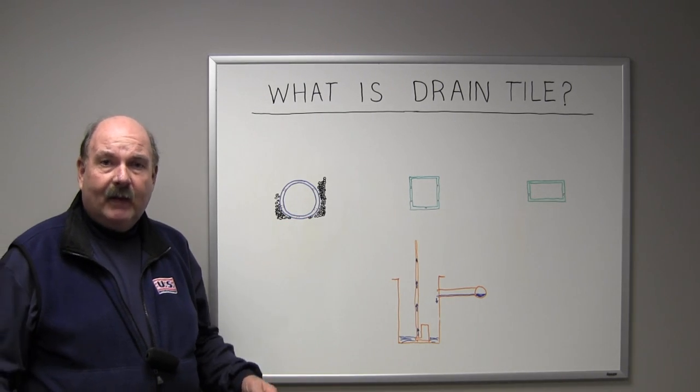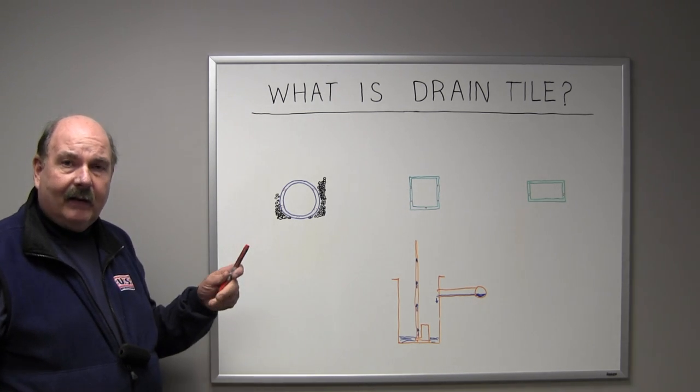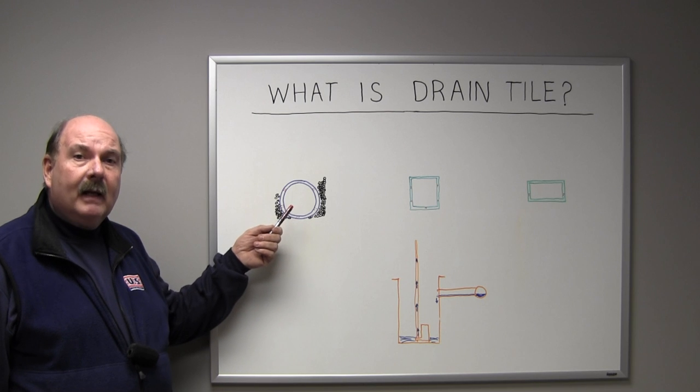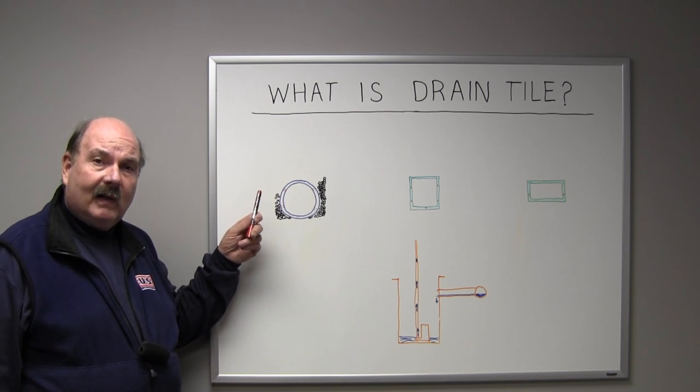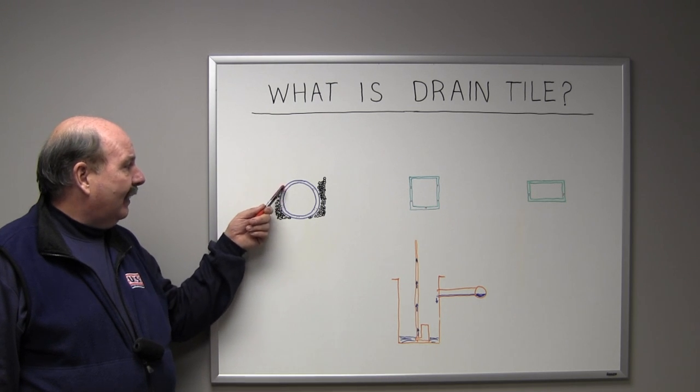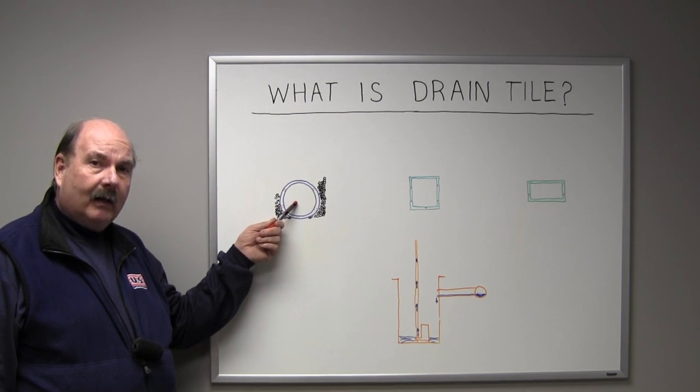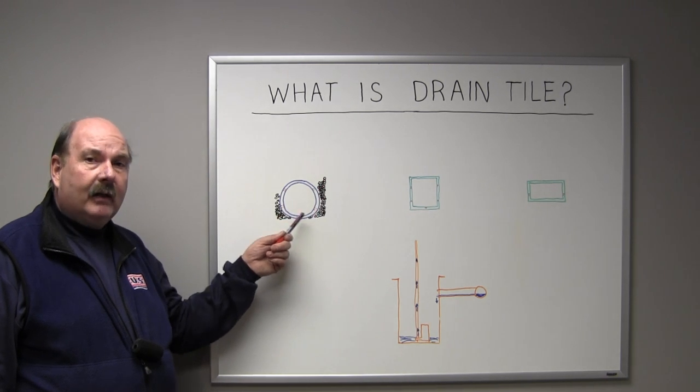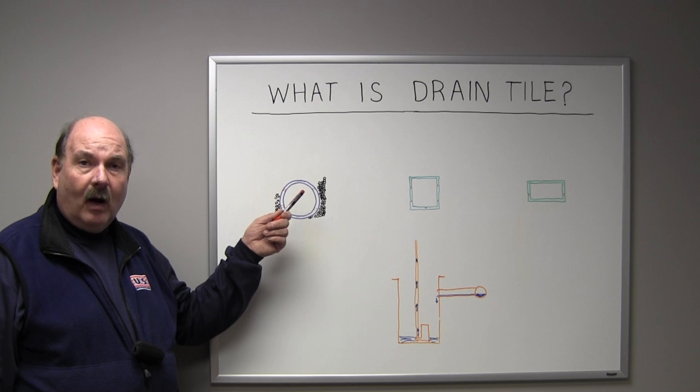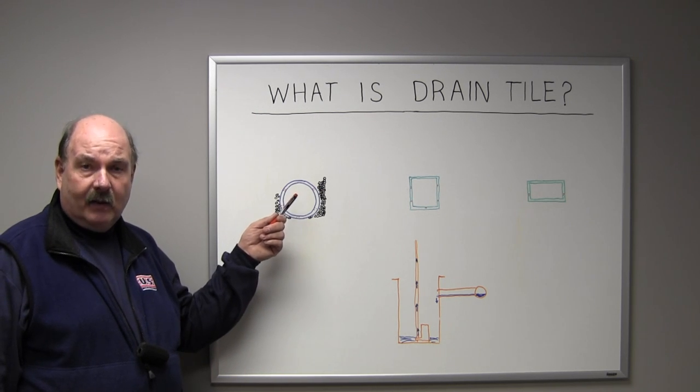Now that we understand shape doesn't really determine anything else other than it creates a hollow for the water to pass through, let's talk about how the water gets into it. No matter what the shape, there's some type of openings in the pipe to allow the water to drain into it. Typically, stone surrounds the drain tile. That acts as a natural filter of the water so you don't drag mud into the drain tile.